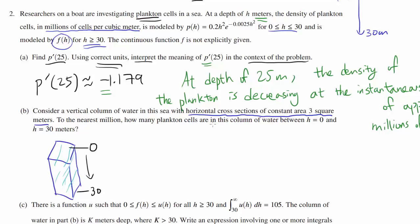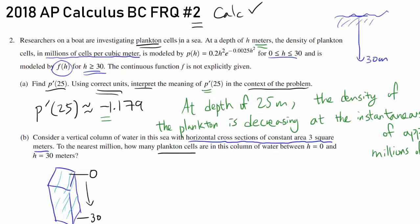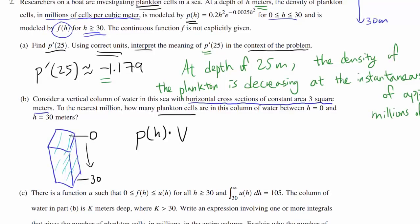So what do we do? We want to find how many plankton cells there are. We know we have our density function, P(H), that's giving us the number of planktons per cubic meter. So we have to multiply this thing by volume if you want to find the actual number of plankton cells. We know the cross-section always has area of 3 square meters.